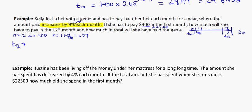So T sub 12, the amount she has to pay in the 12th month, is equal to 400 times our R value, which is 1.09, to the power of N, here, which is 12 minus 1.